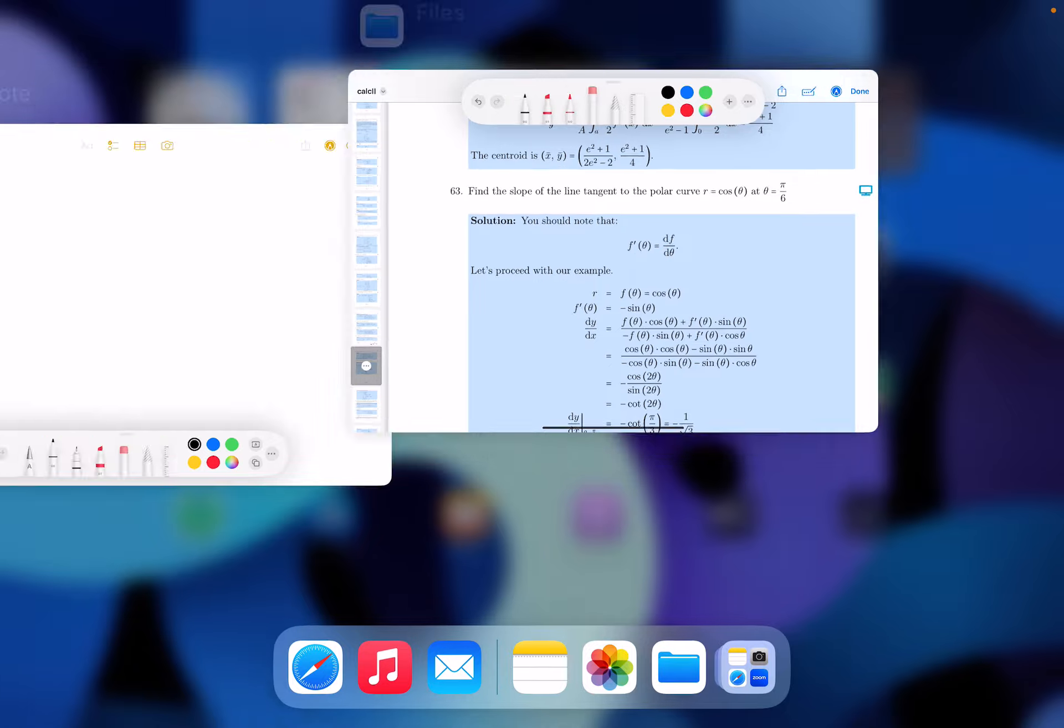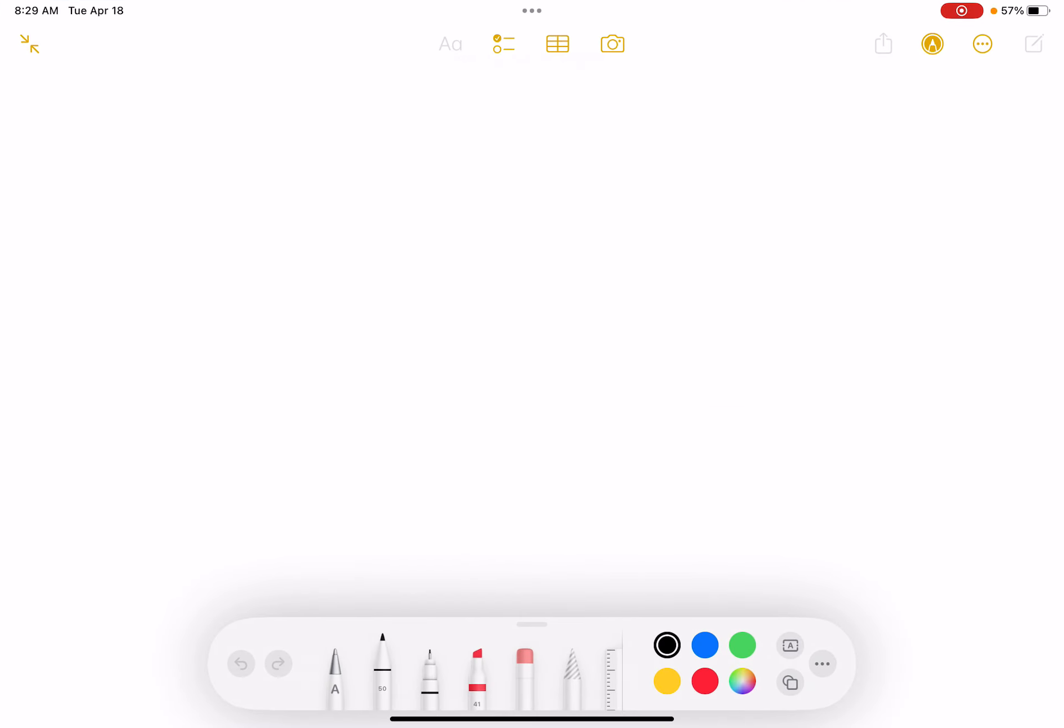Let me go to the whiteboard. We're doing problem number 63, and they want me to find the slope of the line tangent to the polar curve r = cos(θ) at the point where θ = π/6.